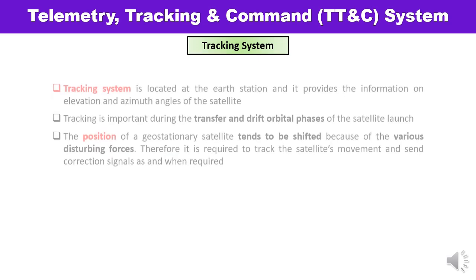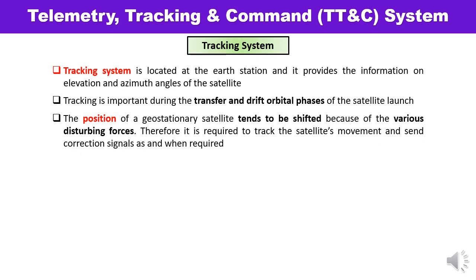The tracking system is located on the earth station — this is important to remember. It provides information about the range, elevation, and azimuth angle of the satellite. Tracking is very important when the satellite is being moved from the transfer orbit to the final orbit, since one velocity increment is required during that transition. The position of geostationary satellites tends to shift due to various forces, which is why continuous tracking is required.